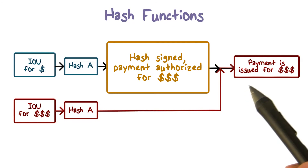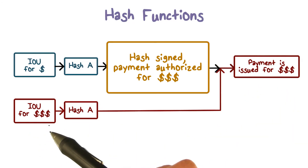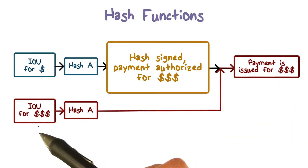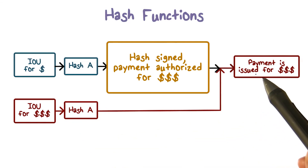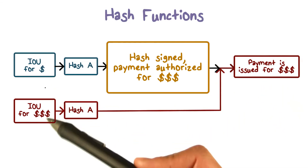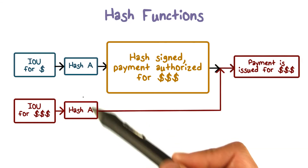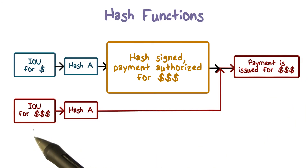Then on a later day, Bob can present the signature with a different message — that is, the message with a larger amount — and ask Alice to pay for it. And because these two different messages have the same hash value, Alice cannot deny that she has signed it. That means Alice cannot deny that she had agreed to pay this larger amount.